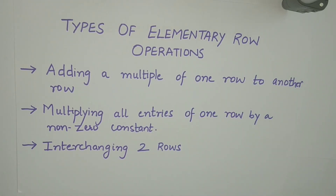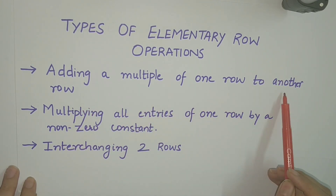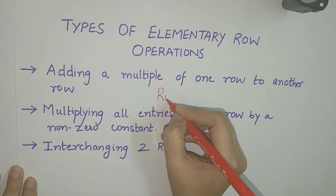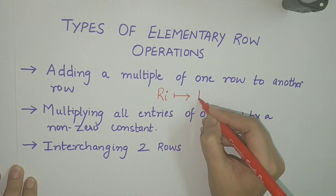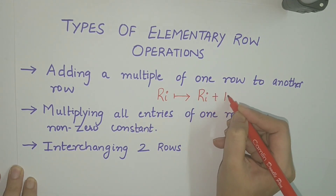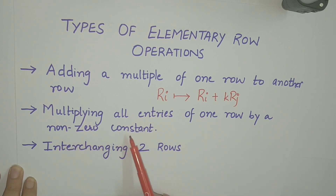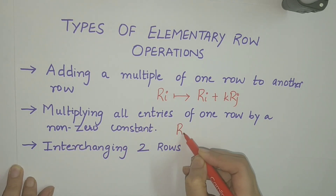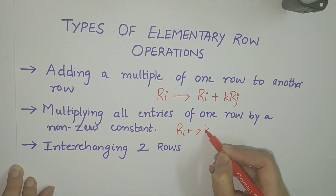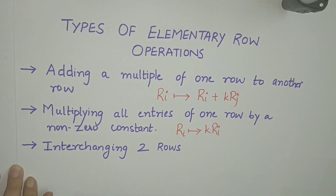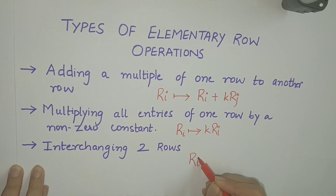There are three types of elementary row operations. First, adding a multiple of one row to another row — mathematically, R_i can be changed to R_i plus k times R_j. Second, multiplying all entries of one row by a non-zero constant, i.e., R_i can be transformed to k times R_i. The last one is interchanging two rows, that is, the i-th row can be interchanged with the j-th row.